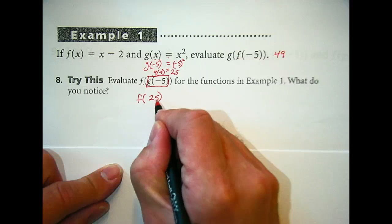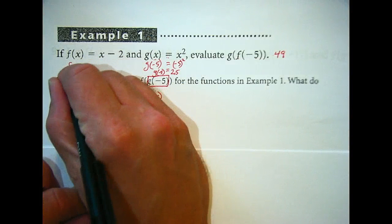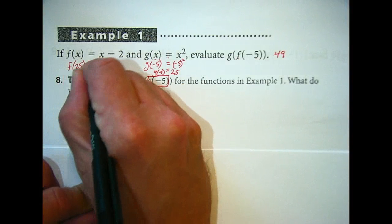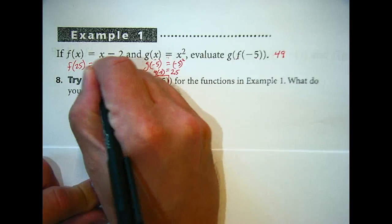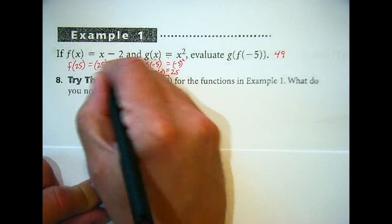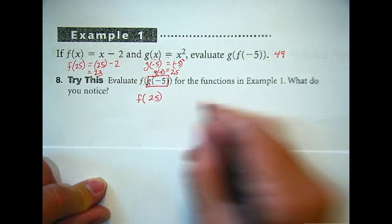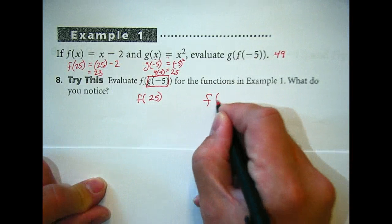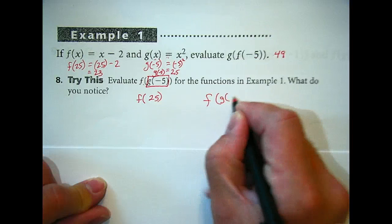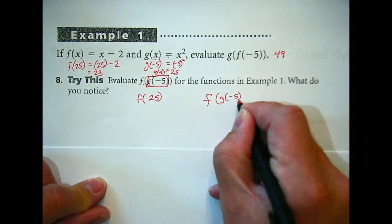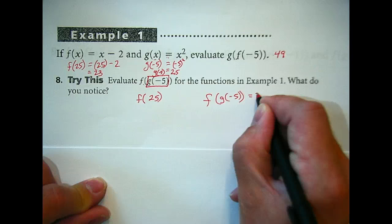So once we put that in, we're going to substitute that over here. f(25) equals 25 - 2, which is 23. So f(g(-5)) equals 23.